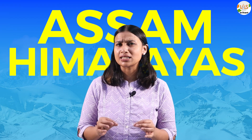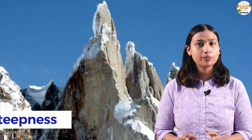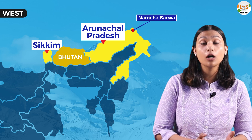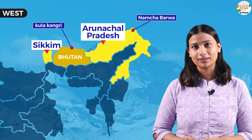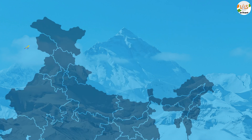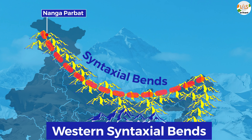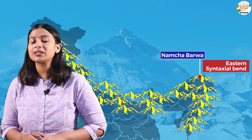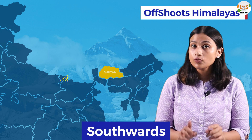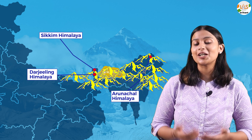Aur sabse last me aate hai Assam Himalayas — hala ki isse Assam Himalayas bulate zaroor hai, par ye Sikkim aur Arunachal Pradesh me aate hai. Ye ranges generally kaafi steep hoti hai, lekin agar aap east ki taraf jayenge, jaisa ki Namcha Barwa, Kula Kangri jaisi ranges, to inki steepness kam hone lagti hai. Isi Himalayas me kuch significant features bhi hai, jaisa ki syntaxial bends or offshoot of Himalayas. Jab Himalayas ranges sharp southwards bends lete hai, toh usko syntaxial bends kaha jata hai. Western syntaxial bend Nanga Parbat par aakar hoti hai, jahan Indus river ne gorge par deep cut kiya hua hai, aur wahi eastern syntaxial bend aapko Namcha Barwa par dikhai degi. Jab mountains southwards se zyada extend ho jaayein, toh usko offshoot Himalayas bula jata hai — jaisa ki Darjeeling Himalayas, Sikkim Himalayas, Arunachal Himalayas, or Bhutan Himalayas.